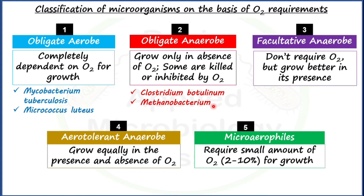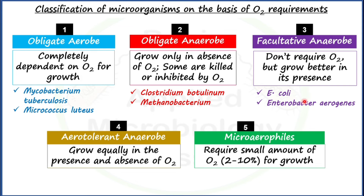For facultative anaerobs, E. coli is a very good example, and in addition, Enterobacter aerogenes. Both are members of the family Enterobacteriaceae and both are facultative anaerobes.